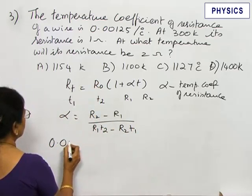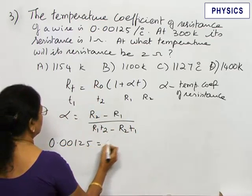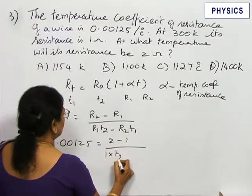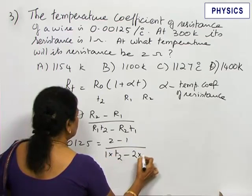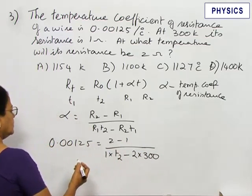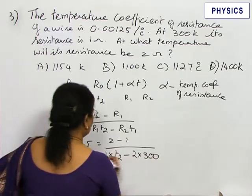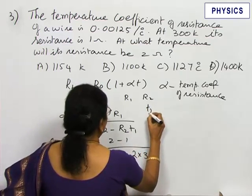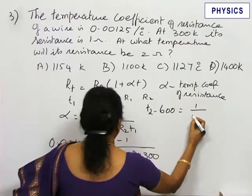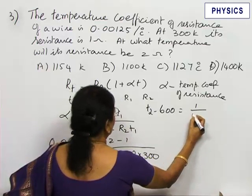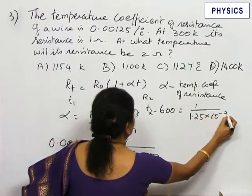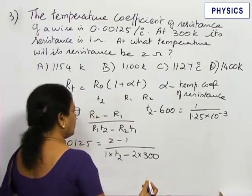Substituting 0.00125 equals 2 minus 1 divided by 1 into T2 minus 2 into T1. We can use temperature either in Kelvin or in Celsius. Cross multiplying, we get T2 minus 600 equals 1 by 0.00125. I'm going to write as 1.25 times 10 power minus 3 for the sake of calculation.